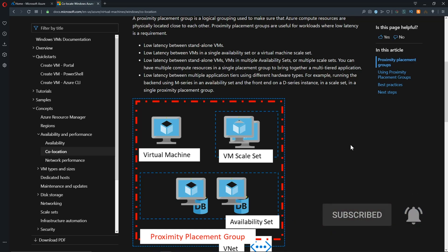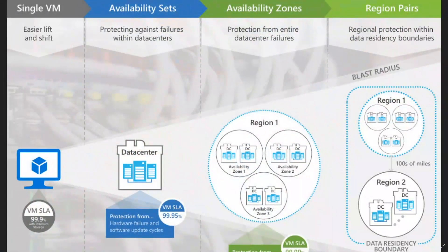This does bring up some limitations — for example, availability zones. When looking at availability in Azure, starting on the right side, we have our different Azure regions that have hundreds of miles between them. Inside those regions there are data centers. Depending on how many data centers there are and where they're located, there may also be availability zones. Region 2 on the bottom has just data centers with no availability zones, but region 1 does have data centers in availability zones.